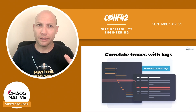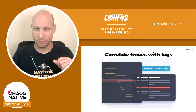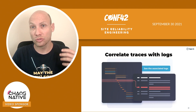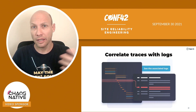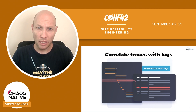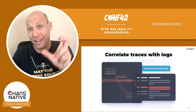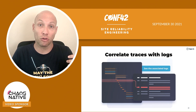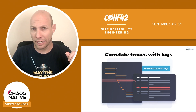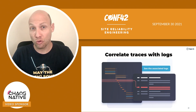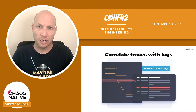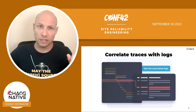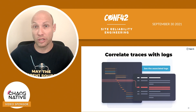Next, combine and correlate traces with logs. Logs together with traces are extremely powerful. Logs contain a lot more context that can augment what you see from the traces. The best practice is to add the trace ID to the logs — very similar to what we did with the request ID, but you don't need to take care of generating and propagating it. You just take the trace ID from the instrumentation library and embed it as part of your logs, making it very easy to correlate traces with logs.